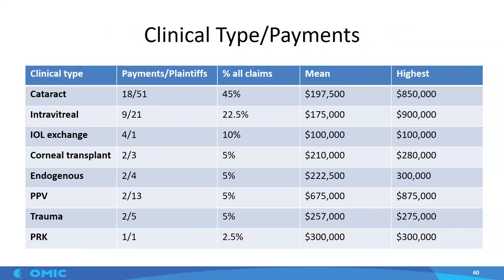This chart shows which procedures patients had before developing endophthalmitis. Cataract surgery is the most frequently performed surgery and accounted for 45% of claims. Intravitreal injections have actually exceeded the number of cataract surgeries but represented 23% of claims in this study. Other precipitating events included corneal transplants, IOL exchanges, vitrectomies, and PRK. It's also not uncommon for a patient to develop endophthalmitis after trauma, especially if there's a retained foreign body, and two payments were made to patients who had endogenous endophthalmitis that had spread to the eye.